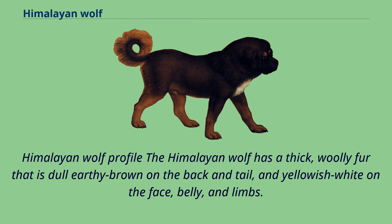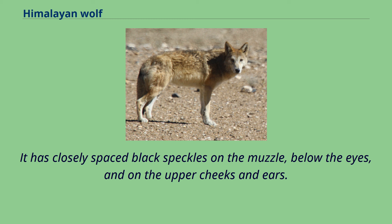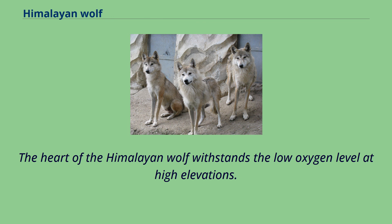The Himalayan wolf has thick, woolly fur that is dull earthy brown on the back and tail, and yellowish white on the face, belly, and limbs. It is about 110 cm long and 76 cm tall at the shoulder, and it is larger than the Indian wolf. It has closely spaced black speckles on the muzzle, below the eyes, and on the upper cheeks and ears. It weighs about 35 kg. The heart of the Himalayan wolf withstands the low oxygen level at high elevations, and it has a strong selection for a gene that initiates cardiac excitation.